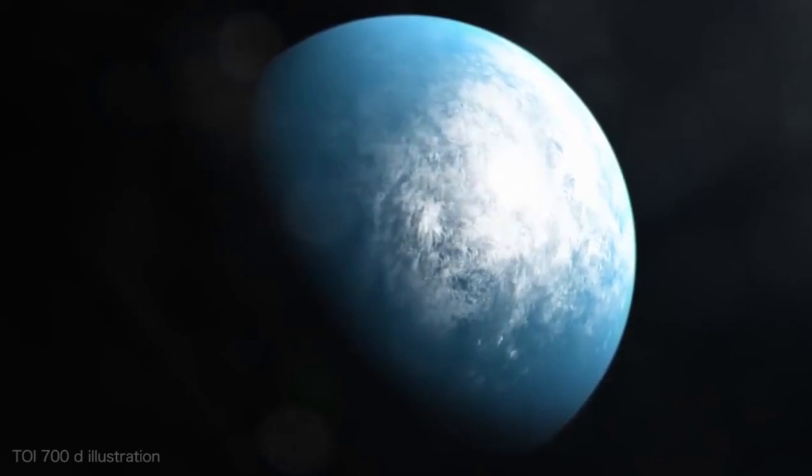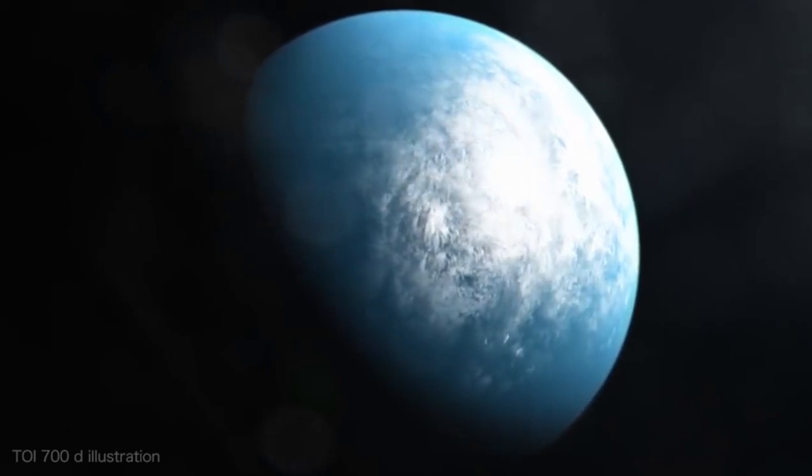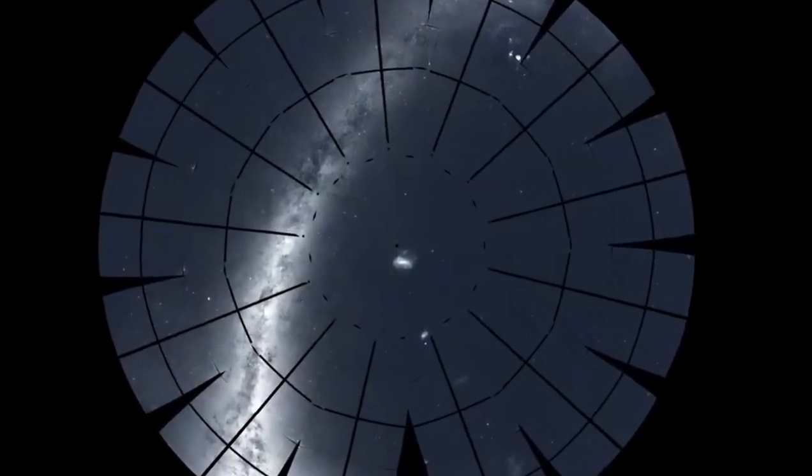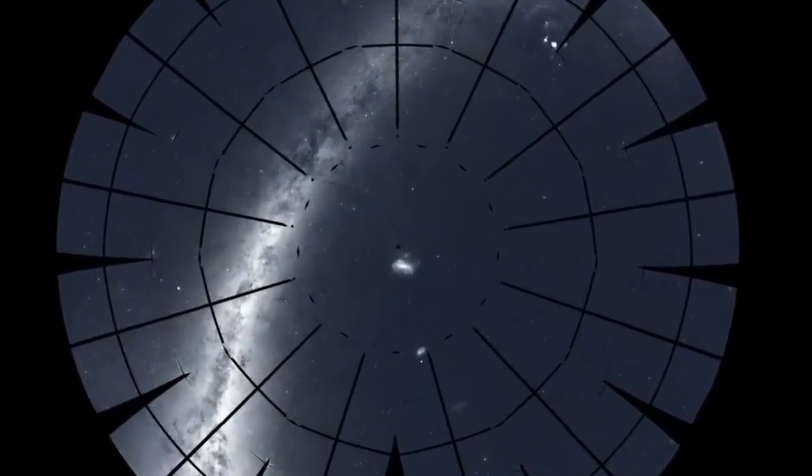TOI 700D has the potential for liquid water on its surface. TESS stares at patches of sky for long stretches, recording light from thousands of stars.